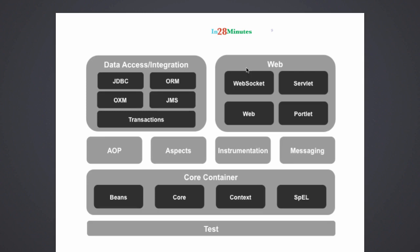Now that we've looked at the data access/integration modules and the web modules, let's look at AOP. Spring provides basic AOP — aspect-oriented programming — features, and excellent integration with popular AOP frameworks like AspectJ. The last important module of the Spring framework — definitely not the least — is the Spring Test module. The Spring Test module provides you with the ability to run unit tests without writing a lot of code; it provides the infrastructure so that we can unit test our code very easily. To summarize the Spring modules: we have the core container, the integration modules, the web modules, and the test module.